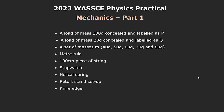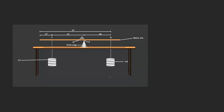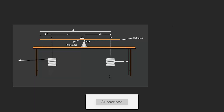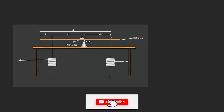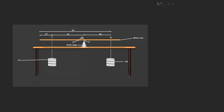Let's start with the first possible experimental setup. In this particular setup, the goal is to apply the principle of moments to determine one of the unknown masses — P, Q, or both. I'm going to assume m1 to be equal to Q and m2 to be equal to P, where Q is 20 grams and P is 100 grams.